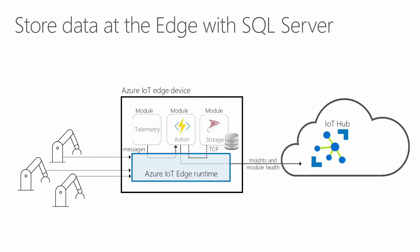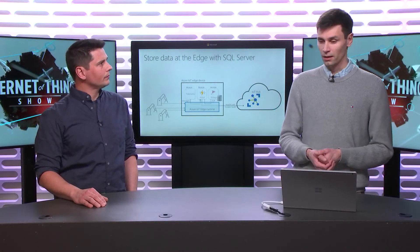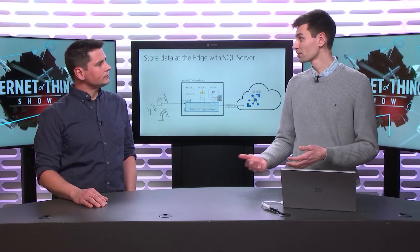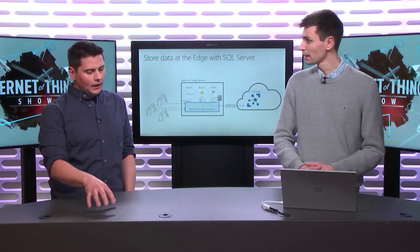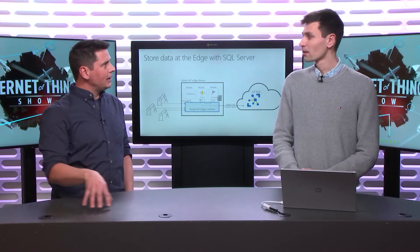For that type of configuration data, twins are perfect. As soon as you need something more advanced for your storage needs, you should bring your own storage solutions — and that's what we'll look at today. SQL Server is a great option; it comes in several flavors: SQL Server Enterprise, SQL Server Express. The same steps would also work with other relational databases like MySQL or PostgreSQL. You bring that storage solution as a module in your IoT Edge solution.